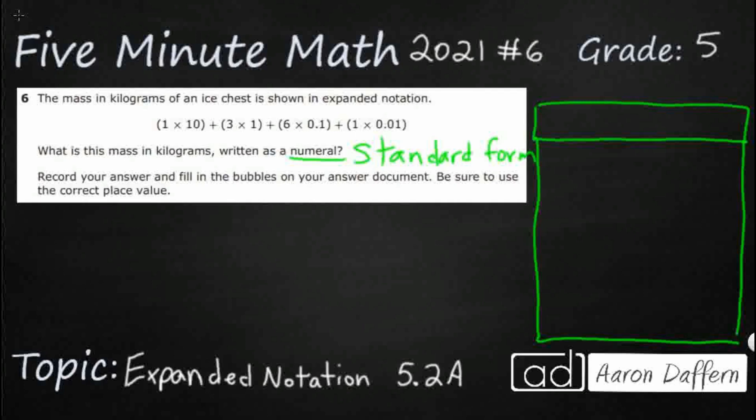In the fifth grade, what we have is a decimal point right there, and then we've got two places to the right of that decimal point, three places to the left of that decimal point. So how do we go ahead and turn this from expanded notation into standard form? Well, since we know that our answer document has five total places, three to the left of the decimal, two to the right, let's go ahead and draw that right here.